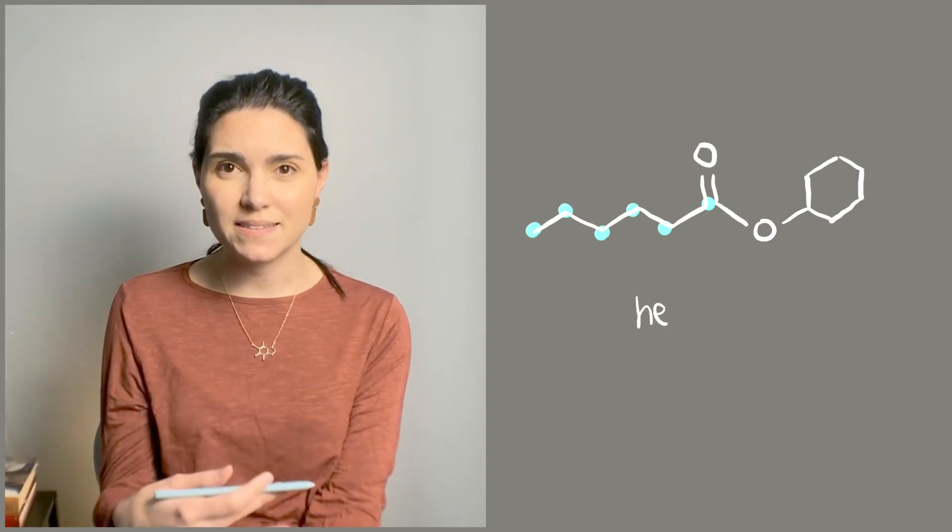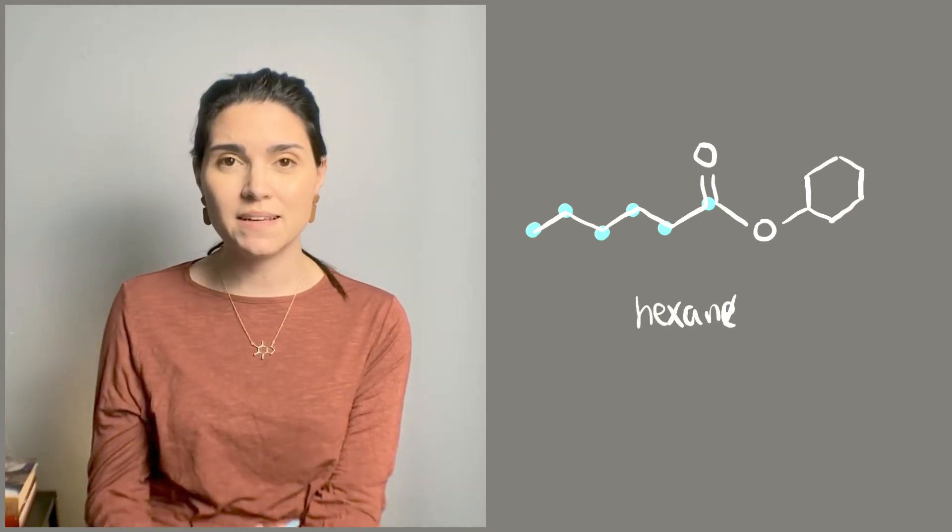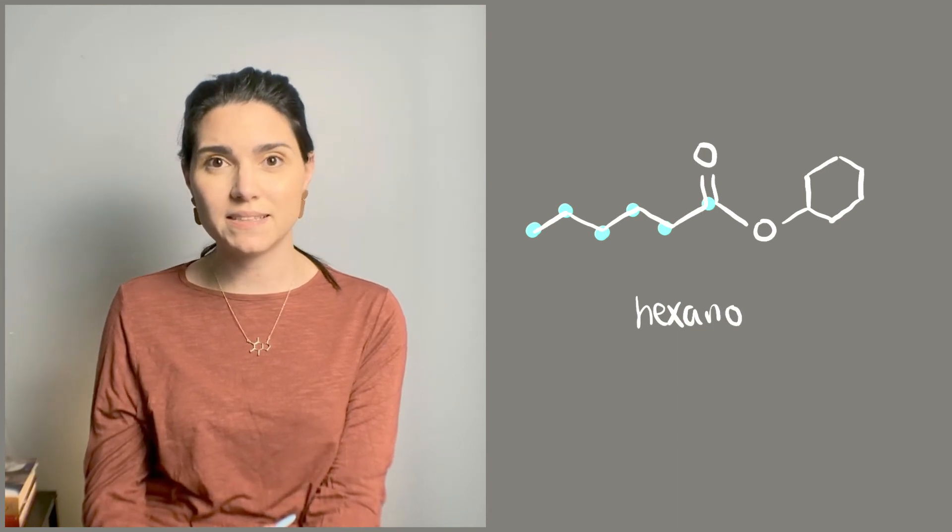So there are six in this example. Six carbons is a hexane. So we drop the E on hexane and we add our ending to get hexanoate.